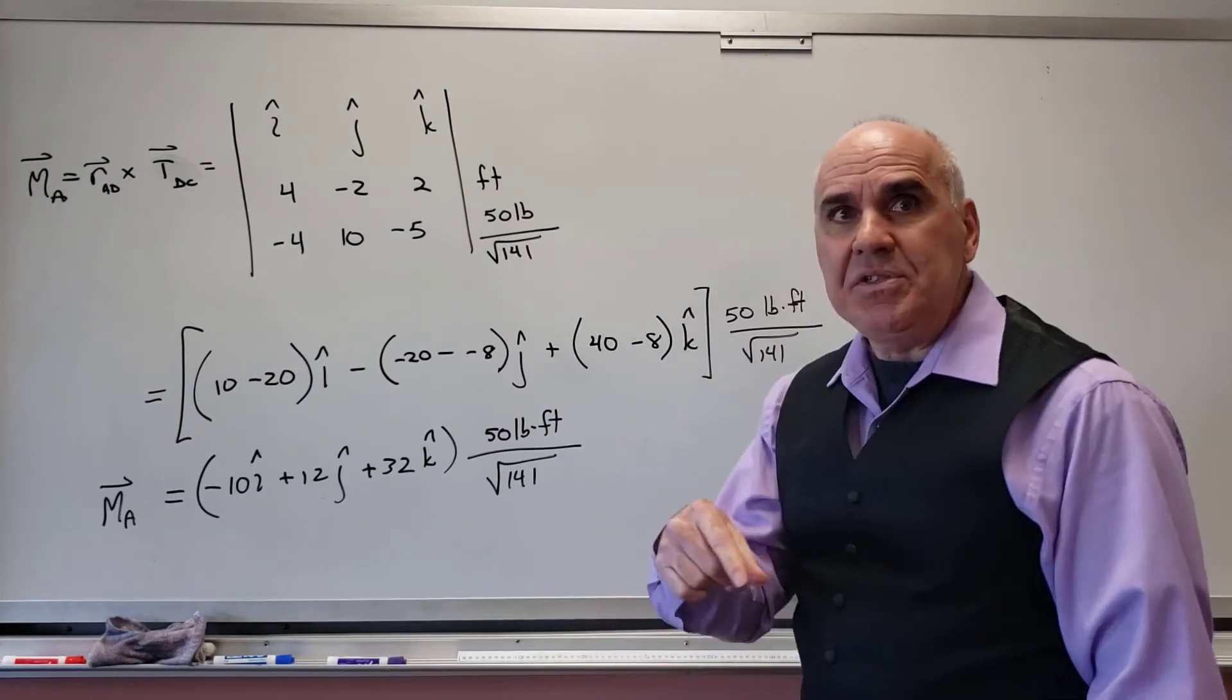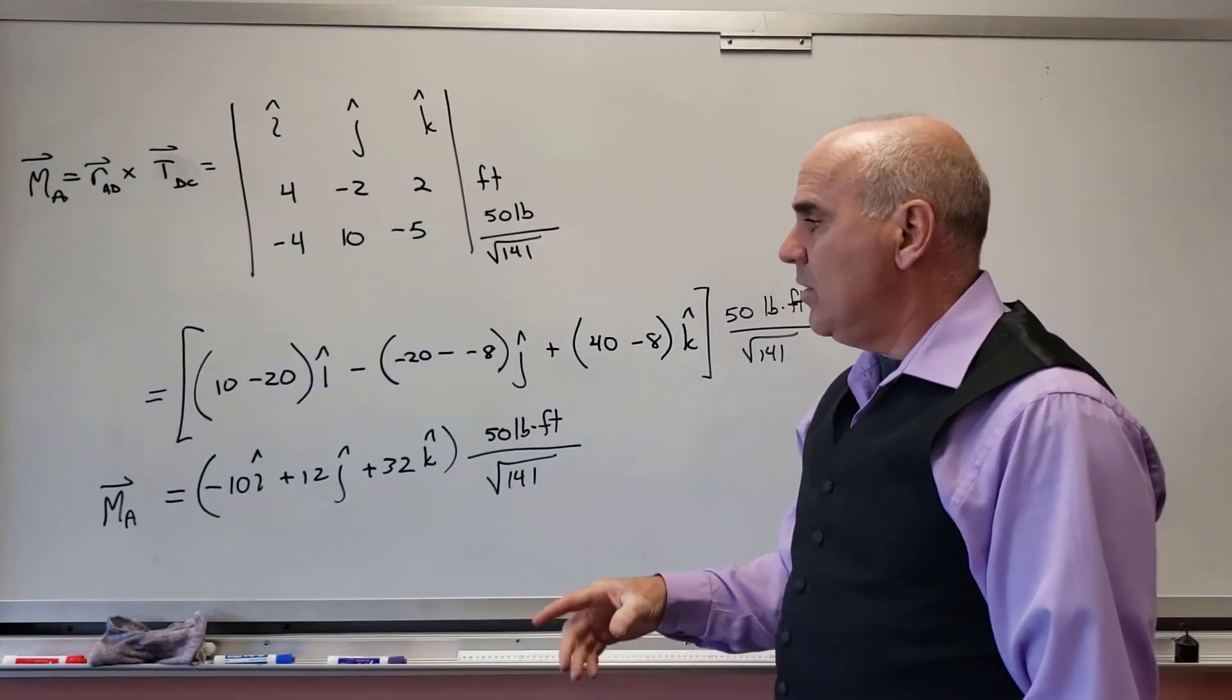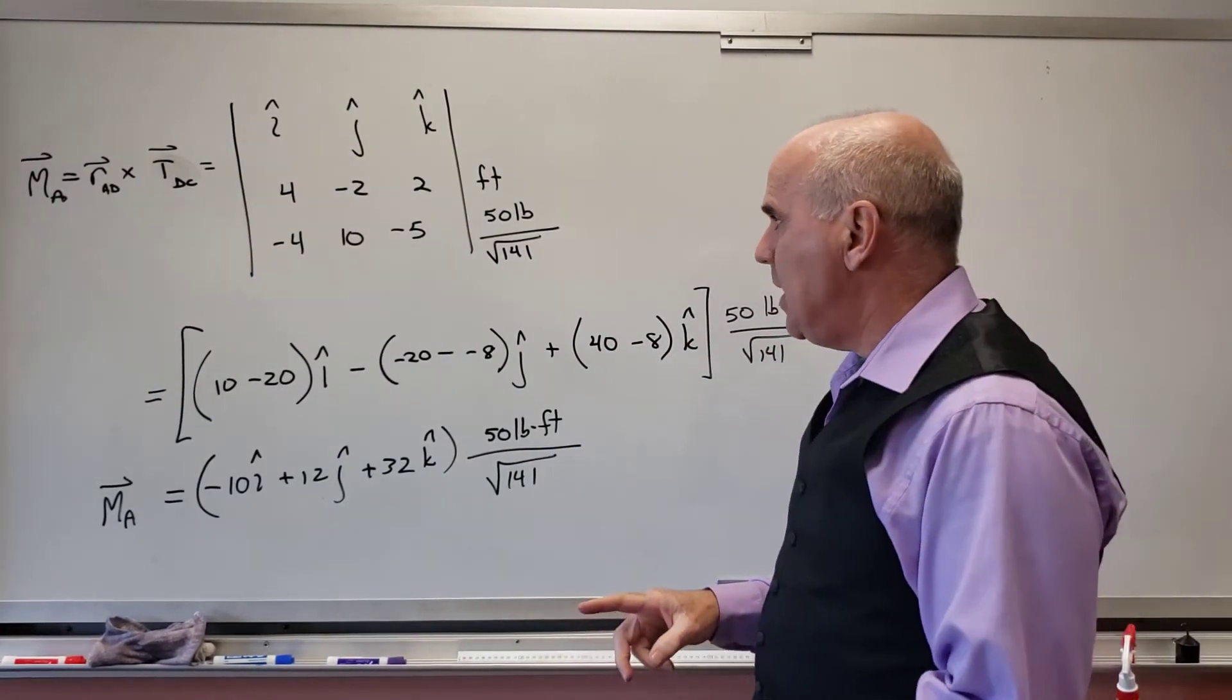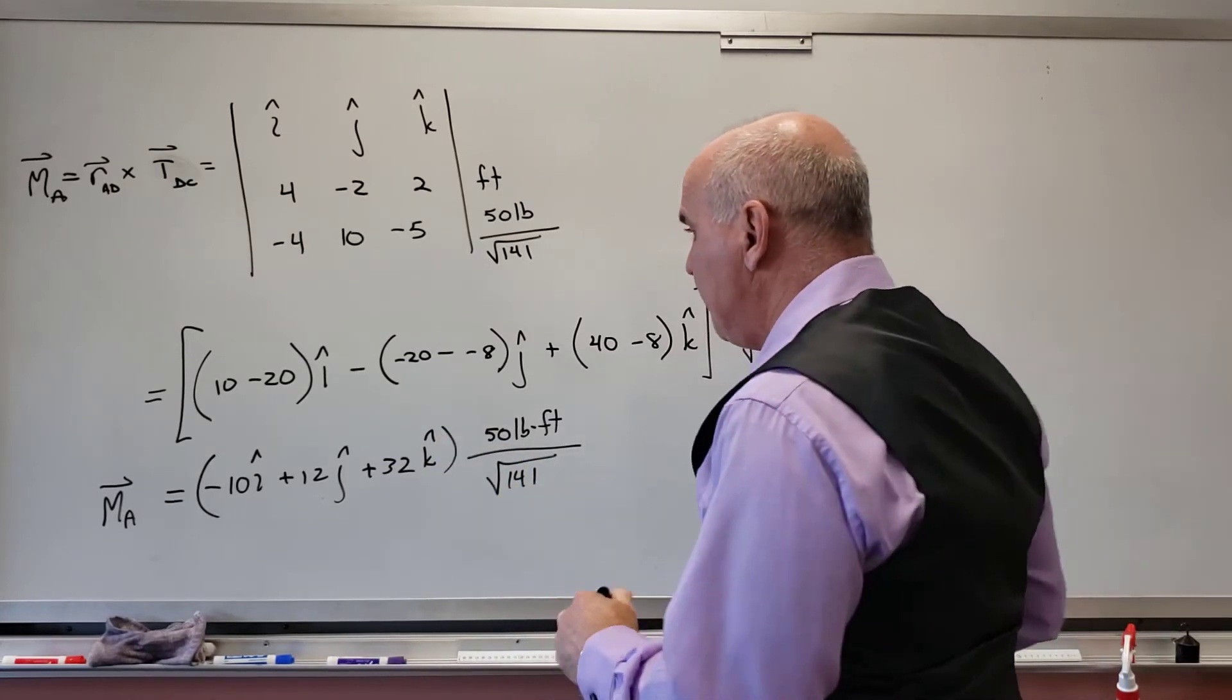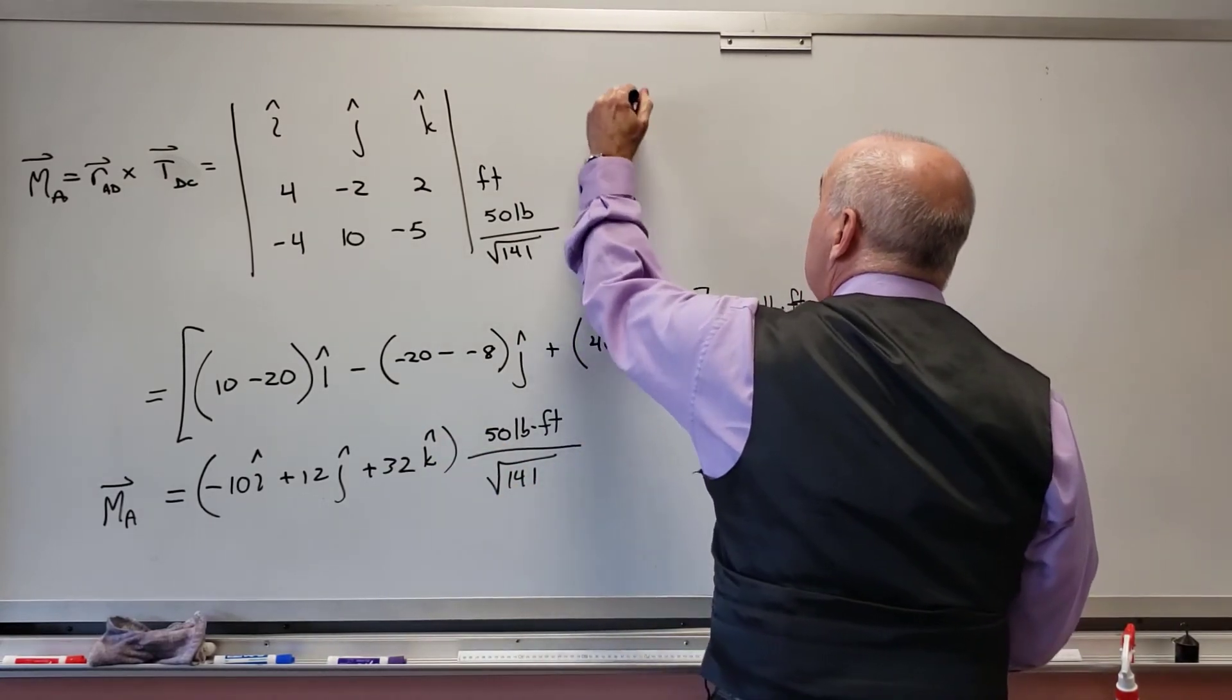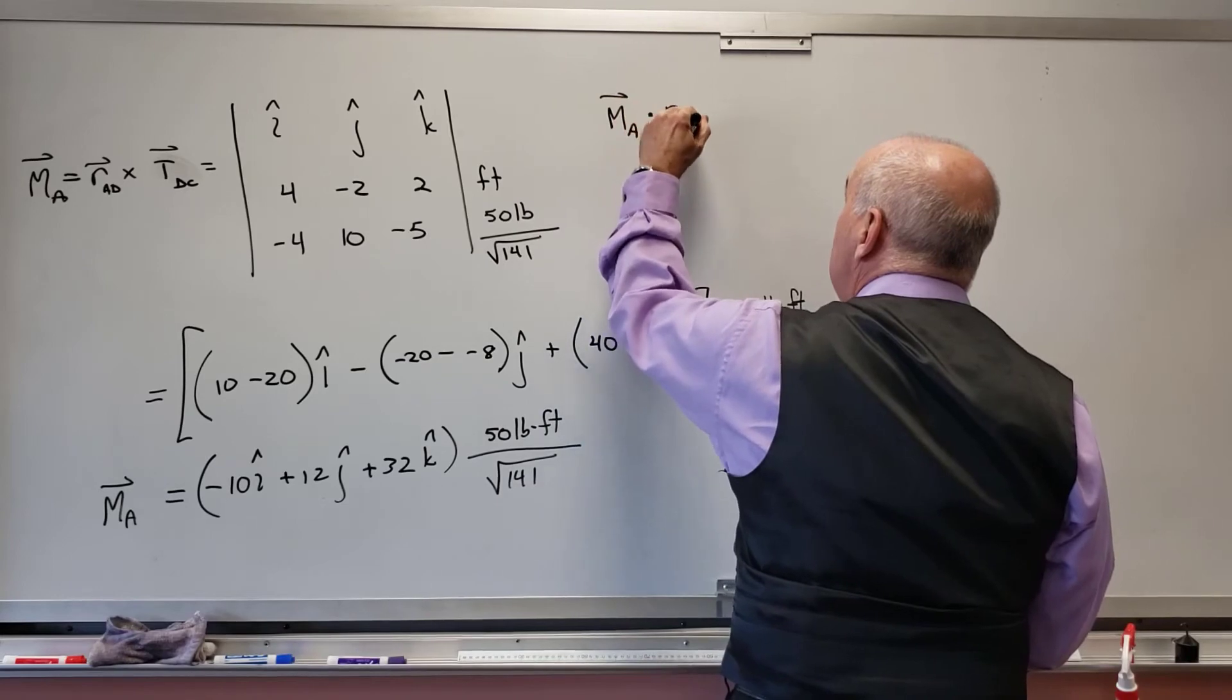And then I'm going to dot this with the unit vector from A to B. So I want M_A dotted with R_AB.